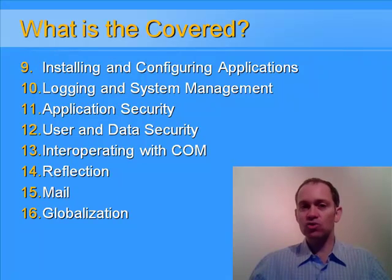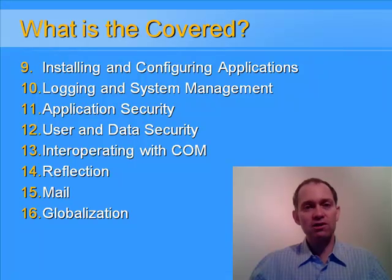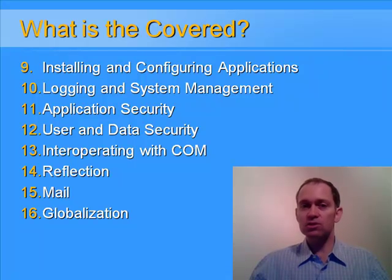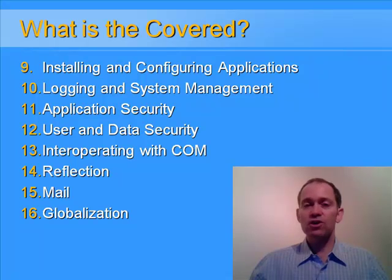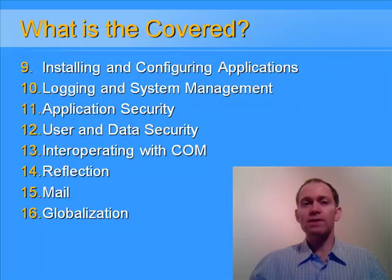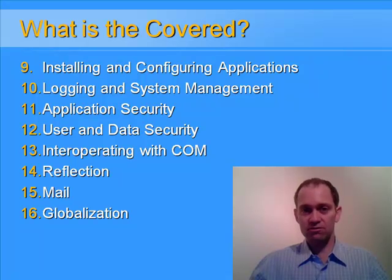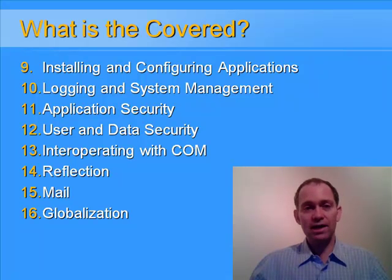Chapter 9 is about installing and configuring your applications. In that chapter, we'll look at things like setup projects, configuration files, and how you can actually read and write those config files at runtime. Logging and system management covers performance counters, event logs, and Windows management instrumentation. Chapter 11, application security, also known as code access security, is a very important and complex topic from an exam point of view, so we make sure we give it good attention. Chapter 12 is on user and data security, covering things such as encryption, hashing, and digital signatures. We'll also look at access control lists and authentication and authorization of the user.